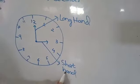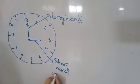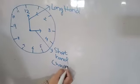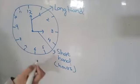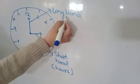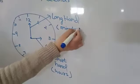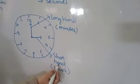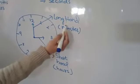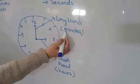This short hand measures the hours, that how many hours are there. Similarly, this long hand measures minutes. So this short hand is known as hour hand and long hand is known as minute hand.